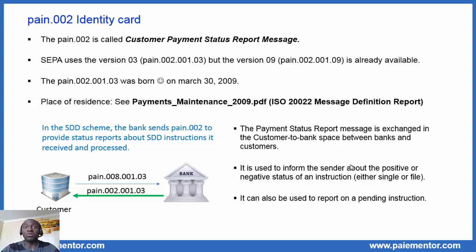We can wonder why SEPA has not adopted the next versions of the PAYING 2. Well, it's probably because after considering the usage, the conclusion was that version 3 is correct for SEPA needs. The PAYING 2 is a message exchanged in the customer-to-bank space — between the creditor bank and its customer, the creditor. So when a creditor sends a PAYING 8 message to its bank, the message might end up being rejected, partially or totally, for various reasons. When this happens, the creditor bank sends the PAYING 2 message to the creditor to inform him about the rejection.